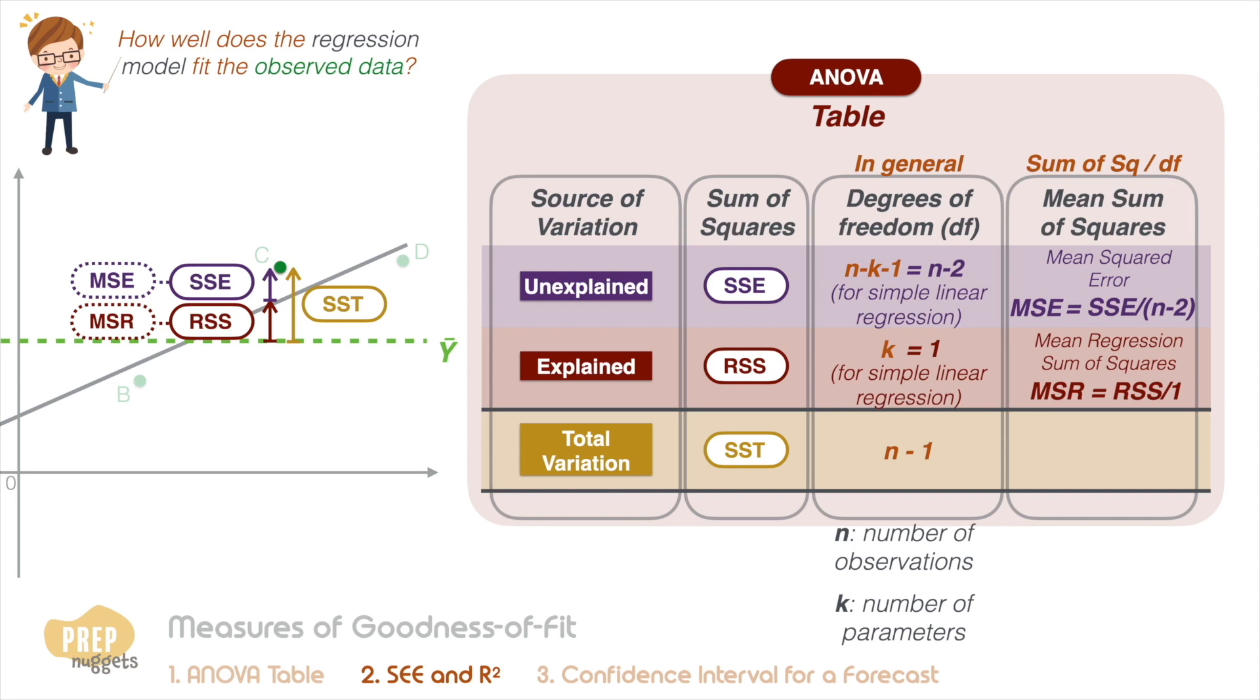There are two approaches to determine the fit of our model. The first approach is to measure the standard deviation of error term, which is equal to the square root of the MSE. We call this the standard error of estimate. Be very clear of the distinction between SEE and SSE. SSE is the sum of the squared errors, while SEE is the standard deviation of the errors.